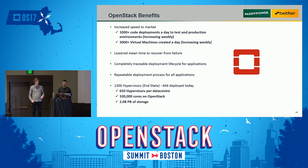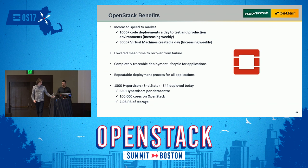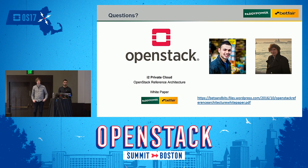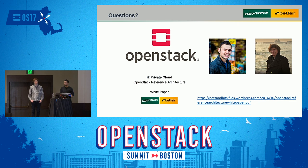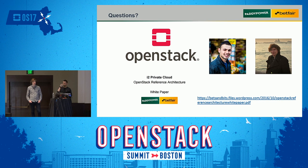The end state for us is 650 hypervisors per data center, which will take us to 100,000 cores on OpenStack and two petabytes of storage. That brings us to the end of the presentation. We have a white paper — a reference architecture — for other users who want to follow the same path and look at how we selected the tooling, how we selected all the vendors, and how we put this implementation together. You can check that out.